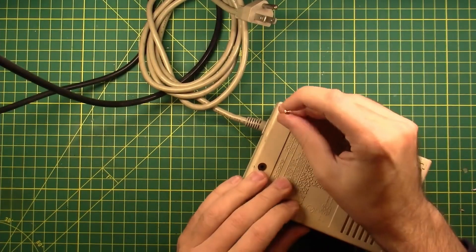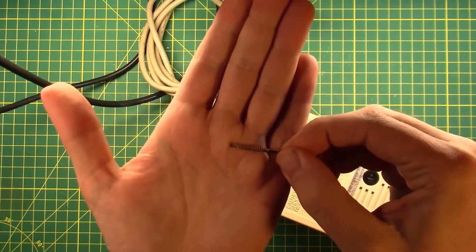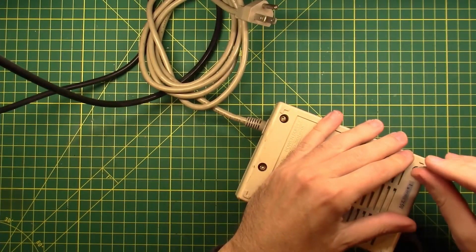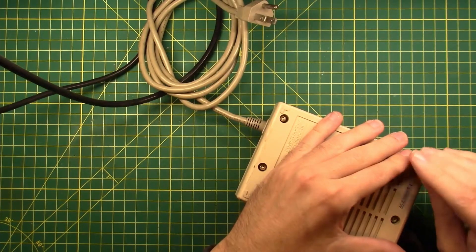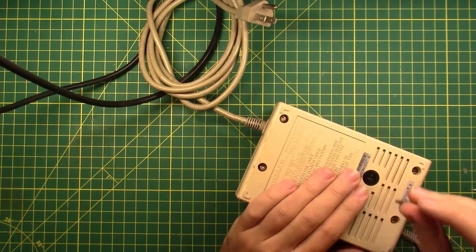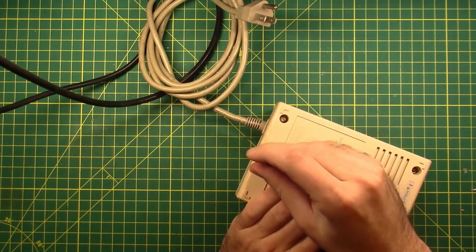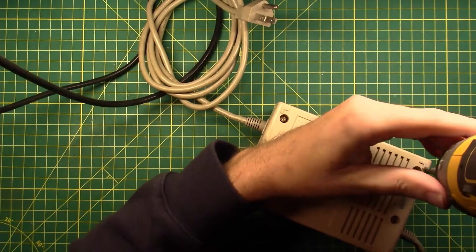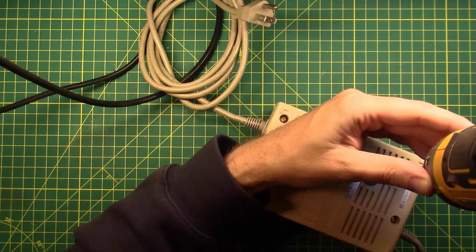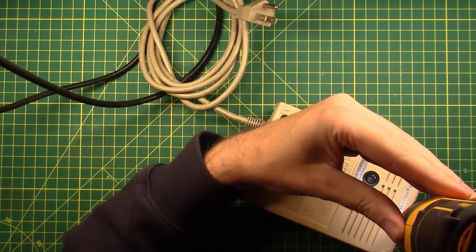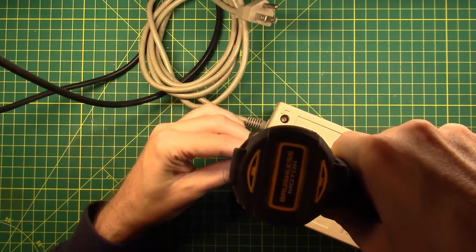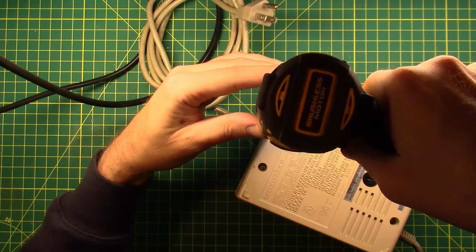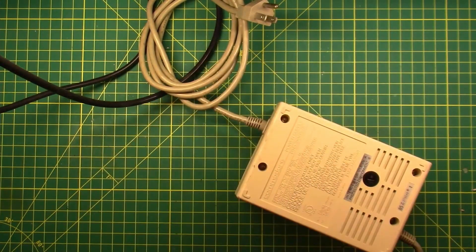Screws back in. These are self-tapping screws going into plastic, so what we're going to do is back them out by hand until they set. If you don't do that, what will happen is you will just cut new threads into the plastic. I will run nice and slow so as not to break anything.